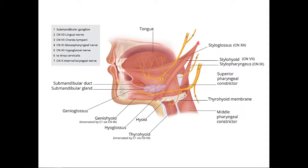There are three muscles that attach to the styloid process: the styloglossus, the stylohyoid, and the stylopharyngeus — and these three muscles have three different innervations. The styloglossus is innervated by the hypoglossal nerve, the stylohyoid by the facial nerve, and the stylopharyngeus by the glossopharyngeal nerve. Note that the pharyngeal constrictors are innervated by the pharyngeal branch of the vagus nerve, cranial nerve ten, with the exception of the stylopharyngeus, which is from CN nine.